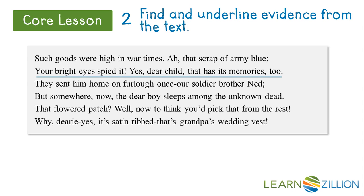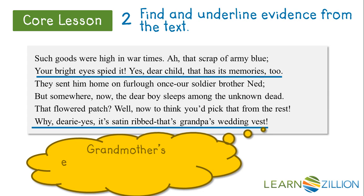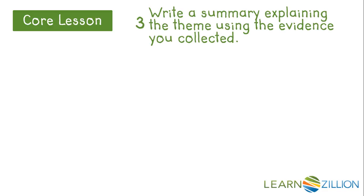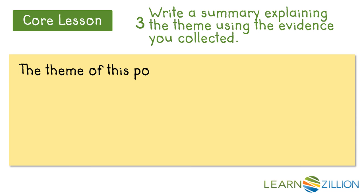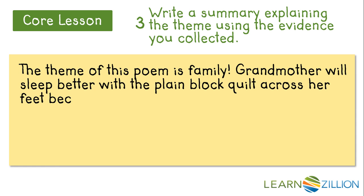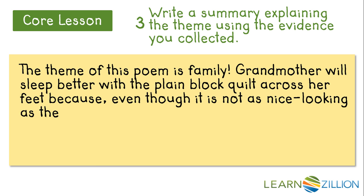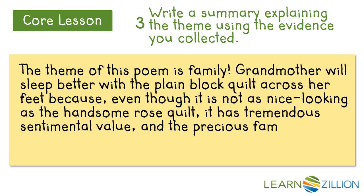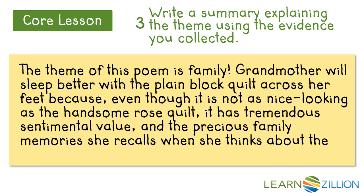We can also see that the author obviously wanted to convey the grandmother's excitement as she explains the sentimental value of the quilt to her grandchild. Her enthusiasm is obvious. So now I know that the theme of the poem is family, and I know the grandmother will sleep better with the plain block quilt because it has a special meaning to her. I've collected some evidence to help me prove that in my summary. The theme of the poem is obviously family. Grandmother will sleep better with the plain block quilt on her feet because even though it's not as pretty as the rose quilt, the sentimental value and the precious family memories she recalls when she thinks about the block quilt give her great comfort and joy. Each piece is a great memory for her.